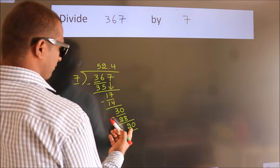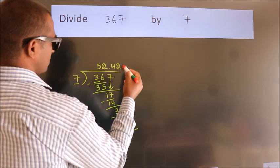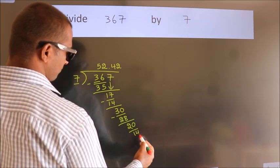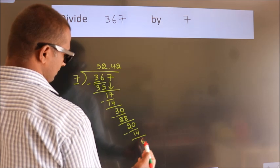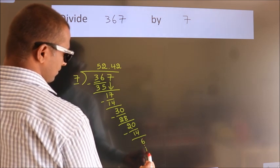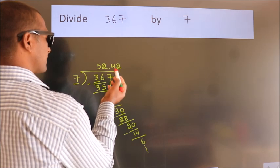A number close to 20 in the 7 table is 7 twos, 14. Now we subtract and get 6. The division continues, but it is enough if we do up to 2 decimal places.